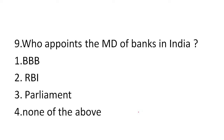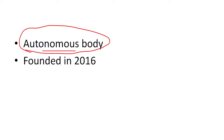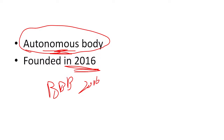The ninth question is very important for bank exam aspirants: who appoints the MD of banks in India? One: BBB, two: RBI, three: Parliament, or four: none of the above? The answer is BBB — the Banks Board Bureau. Remember, BBB is an autonomous body; many people think it is controlled by the Government of India, but it is autonomous. It was founded in 2016 and is the body which appoints the MD of banks in India.